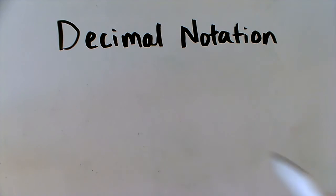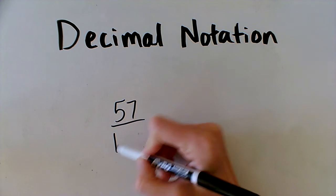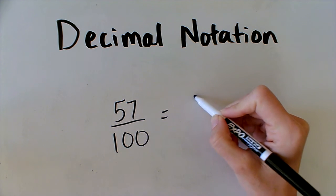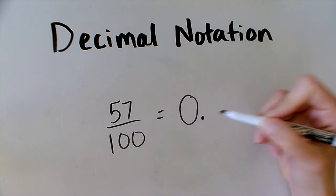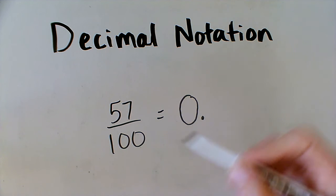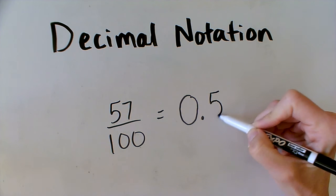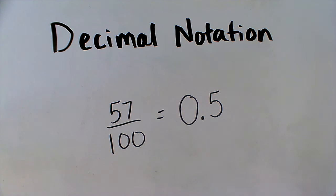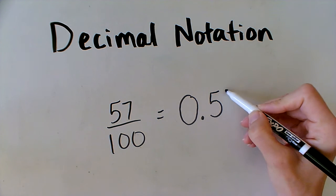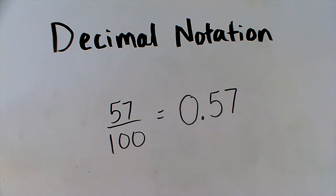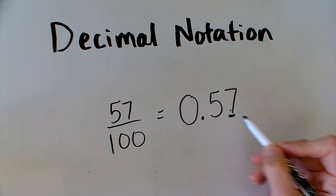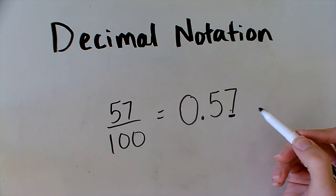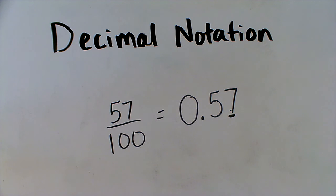What if I have more hundredths? What if I have fifty-seven hundredths? Once again, I don't have any whole numbers, so I have a zero in the ones place. Then I have fifty-seven hundredths. Fifty hundredths is actually five tenths, so the five is going to end up in the tenths place, and then the seven in the hundredths place. Fifty-seven hundredths looks like this. Another way to look at it is to think about money — this is how you would write fifty-seven cents, which is fifty-seven out of the one hundred cents that makes up a dollar.